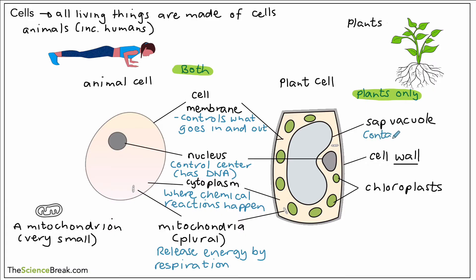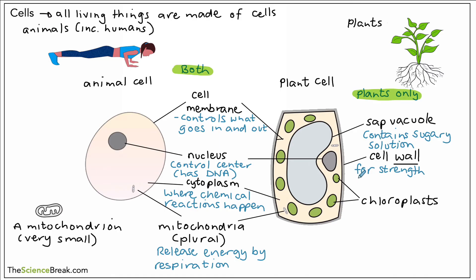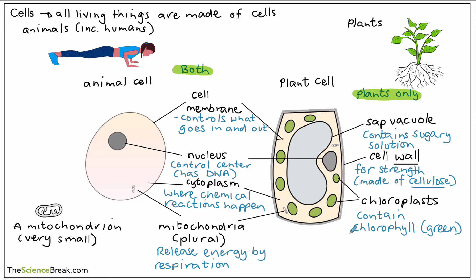For our plant parts: the sap vacuole contains a sugary solution, and may also contain some salts. The cell wall provides strength and support and is made of something called cellulose — a very important point that comes up a lot in biology. Finally, the chloroplasts are really important for the plant. They contain chlorophyll, which is a green substance that absorbs sunlight, and that sunlight is essential for a process called photosynthesis.